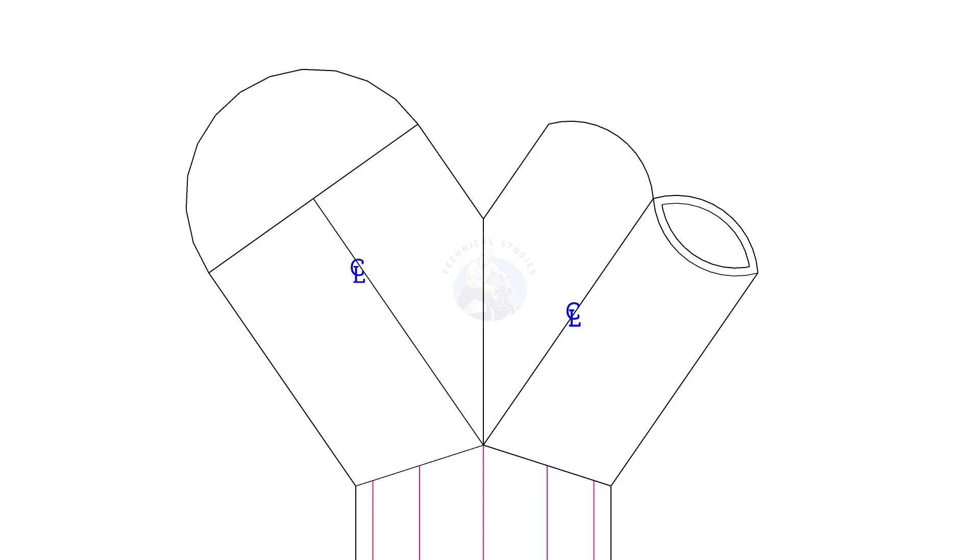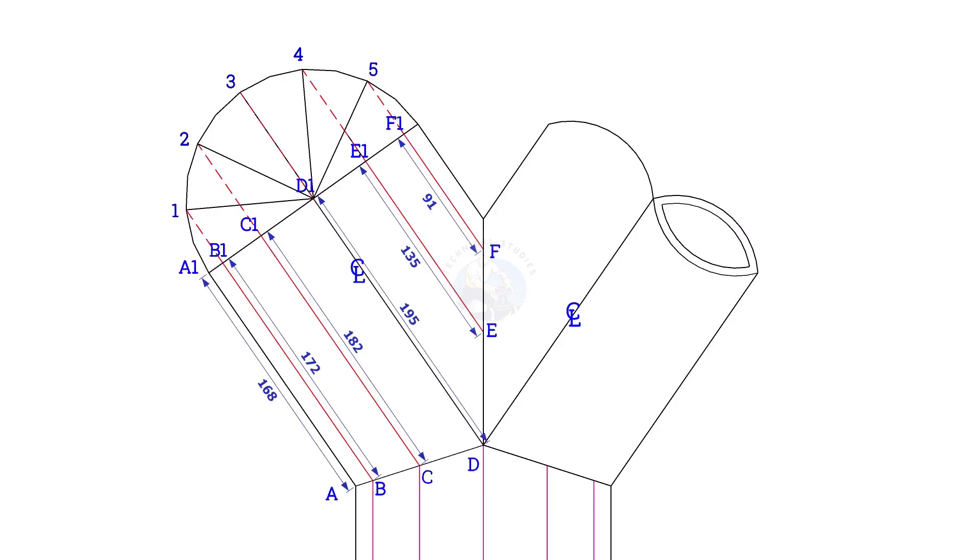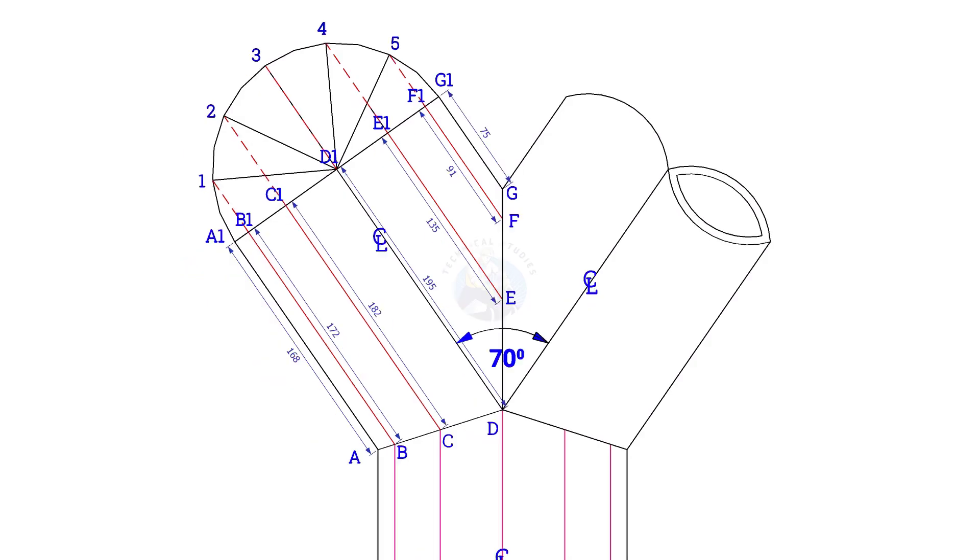To lay out the true length of the branches, the process is the same. Draw a half circle and divide it into 6 parts. Draw perpendicular lines as shown. Note down the lengths.